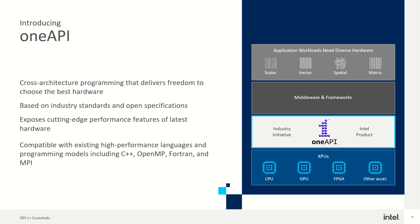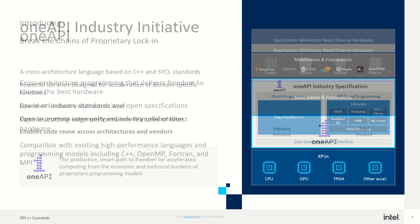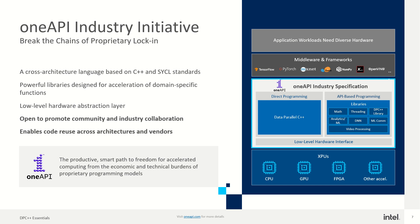Most importantly, OneAPI is compatible with high-performance languages and programming models including C++, OpenMP, Fortran, and MPI. It's a cross-platform as well as cross-architecture initiative. You can see that whether you have a CPU, GPU, FPGA, or other accelerators, the OneAPI industry specification supports DPC++ and API-based programming. For direct programming, you use DPC++ — Data Parallel C++.